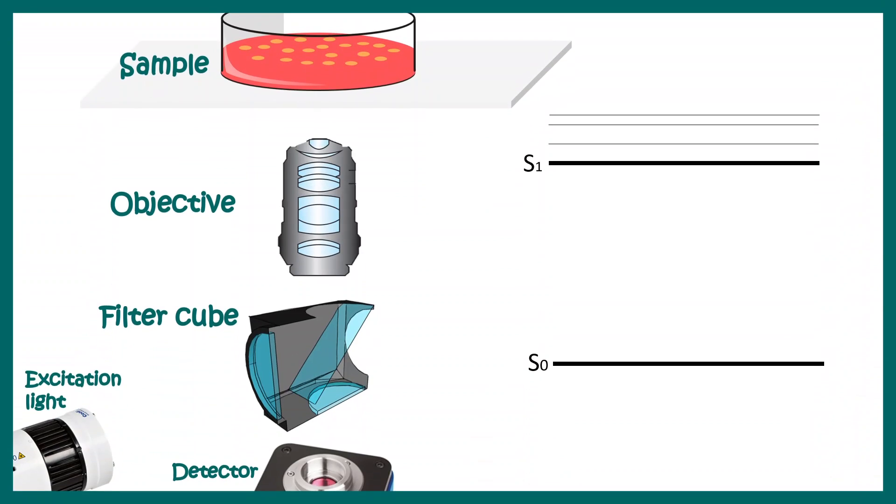Now let's focus on the light path. The light comes from a light source, which might be a mercury lamp or an LED source. The light passes through this filter cube and then gets diverted to the specimen through the objective lens, where it is focused on the specimen via this objective lens.